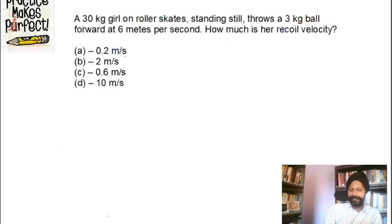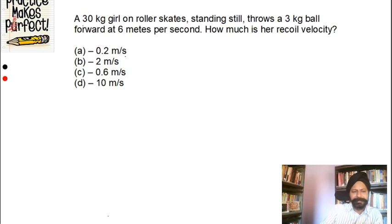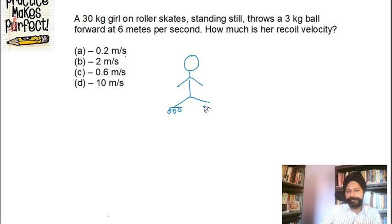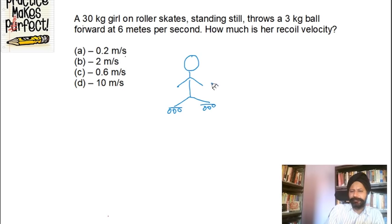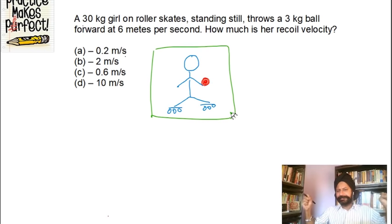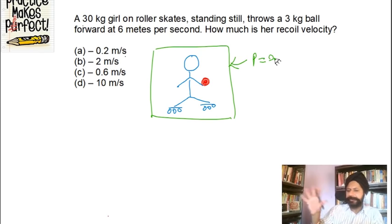Let's try this question on conservation of momentum. Always start by making a picture. Here's a girl wearing roller skates. Roller skates mean there's no friction — you can ignore friction. If you kick a football normally, friction stops you from going backwards. With skates, there's no friction. I'll enclose the girl and ball as the system. Initially they're standing still, so velocity is zero, so the momentum of the system is zero. The girl's momentum is zero, the ball's momentum is zero — total is zero.